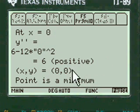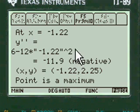put the zero in there, comes up with six, that's a minimum. And minus 1.22 comes up with a minus eleven point nine, that's negative again, so there's a maximum.